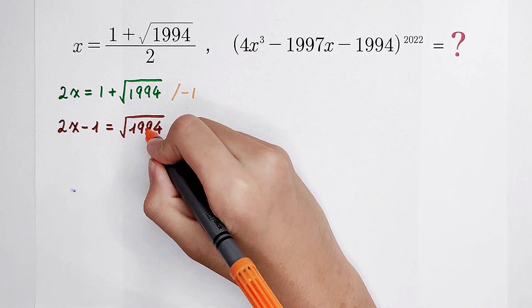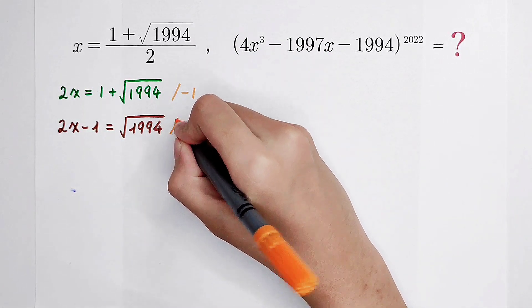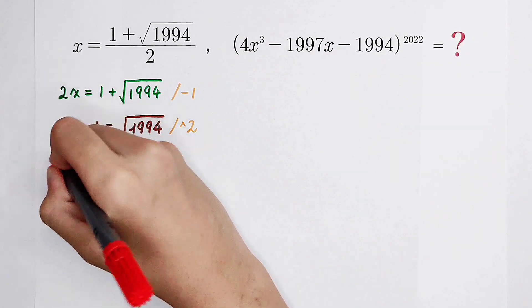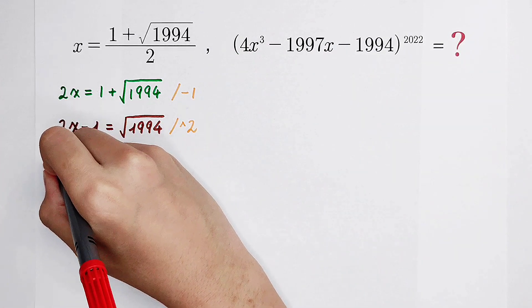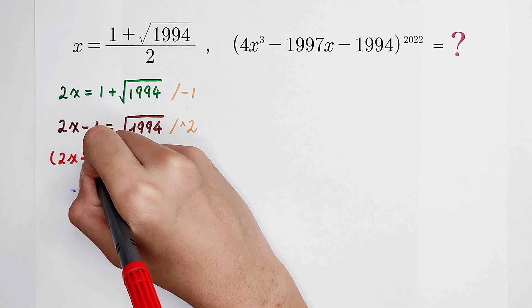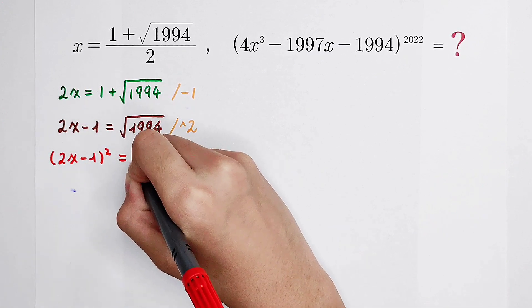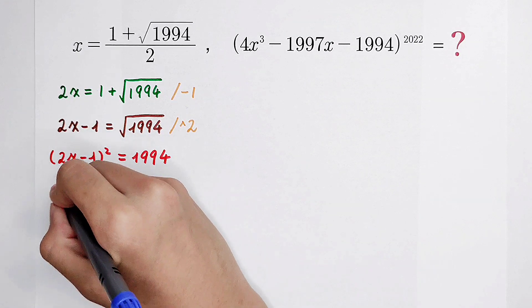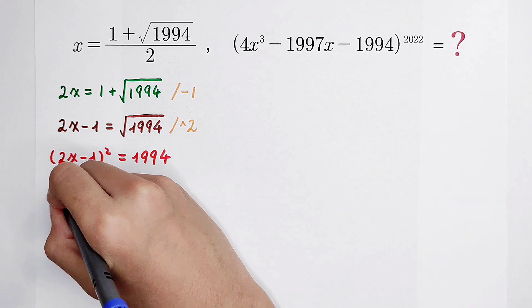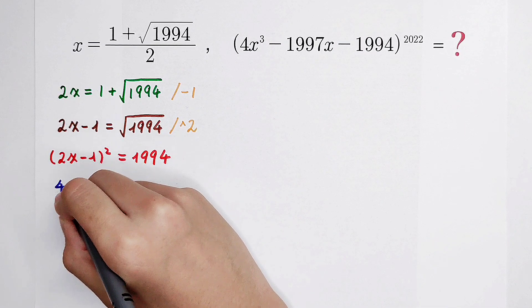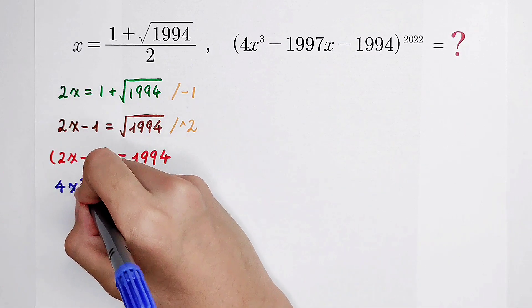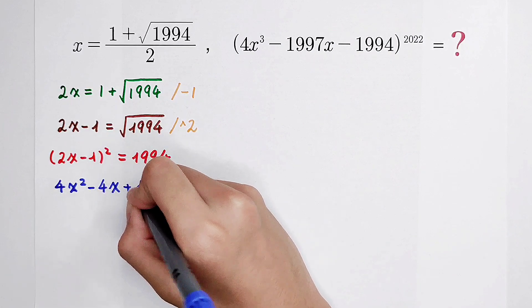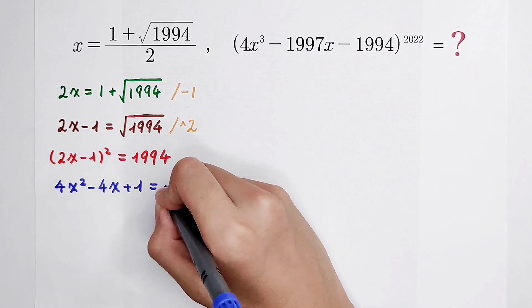But here, there is still a square root. So we should square both sides. 2x minus 1, squared, is equal to 1994.